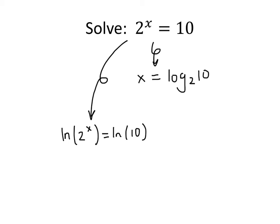One advantage of doing this is that because of our log rules, the natural log of 2^x—one of our log rules says that x comes down—gives us x times ln(2) equals ln(10).